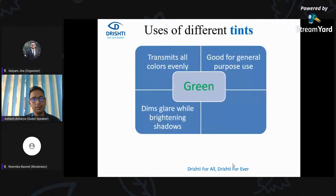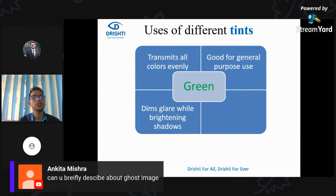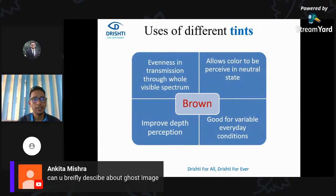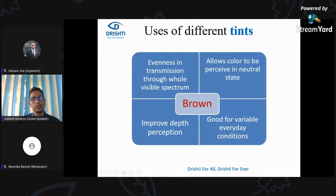Different colors of tint for ophthalmic lenses: Green tint is a soothing color for general purpose — it dims glare while brightening shadows and transmits all colors evenly. It can also be used as a neutral color. Brown causes evenness in transmission across all visible spectrum, allows color to be perceived in a natural state, and can improve depth perception — good for wearable everyday conditions. Brown is an evergreen color; most sunglasses are either gray or brown.